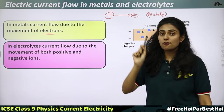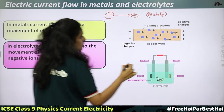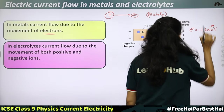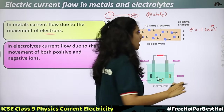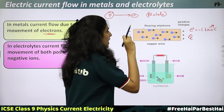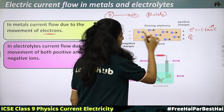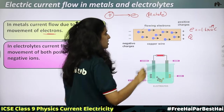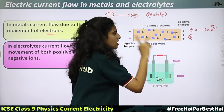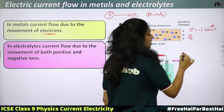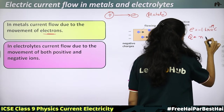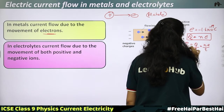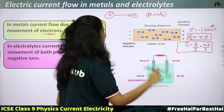In electrolytes, the current I equals the total charge by time. The total charge Q equals the number of electrons N multiplied by the charge of one electron E (1.6 × 10⁻¹⁹ C). So current I = NE/T. In the case of an electrolyte, if N1 is the number of positive ions with charge Q1, and N2 is the number of negative ions with charge Q2, then the total current I = N1Q1 + N2Q2.